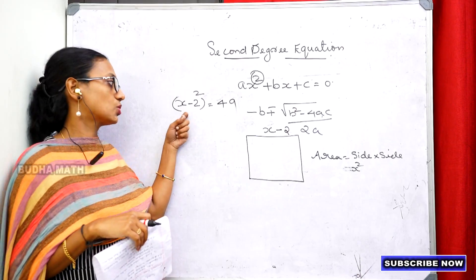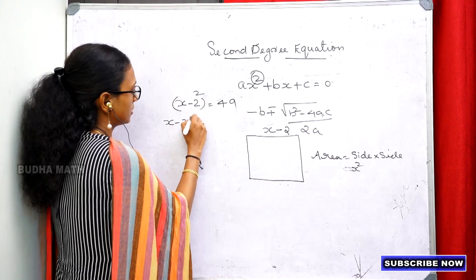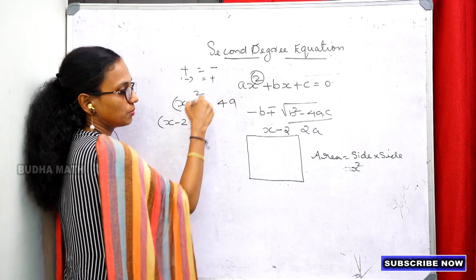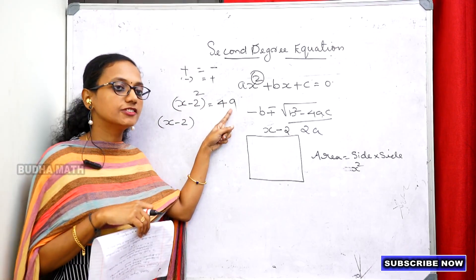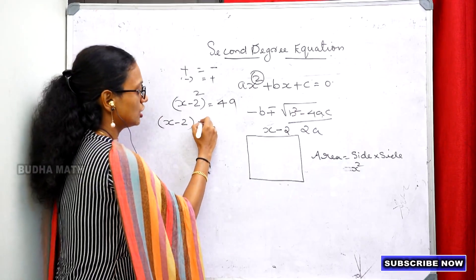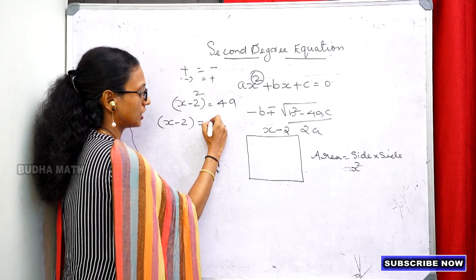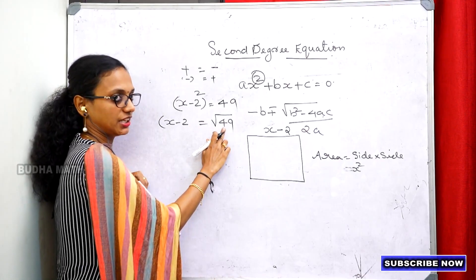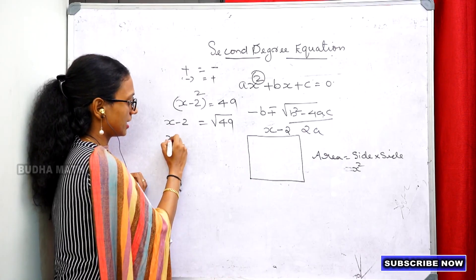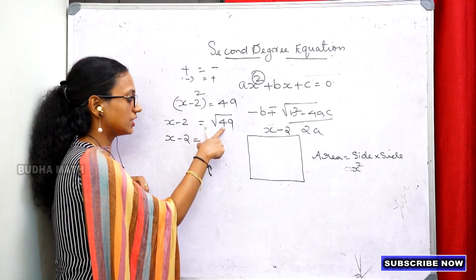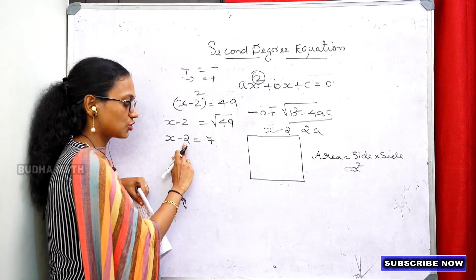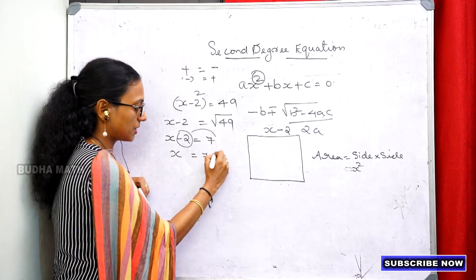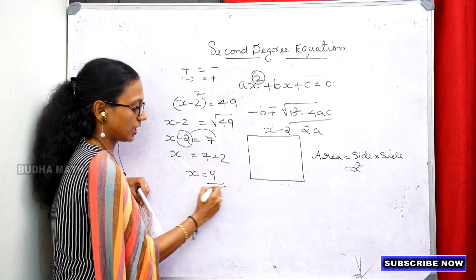So x minus 2 equals 7. Moving minus 2 to the right-hand side, x equals 7 plus 2, therefore x equals 9.